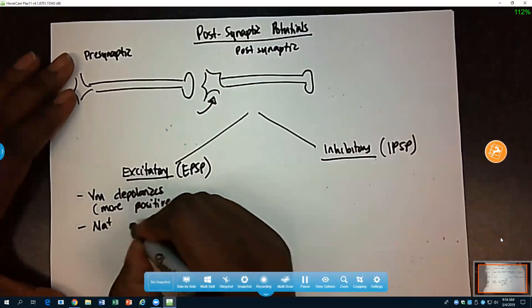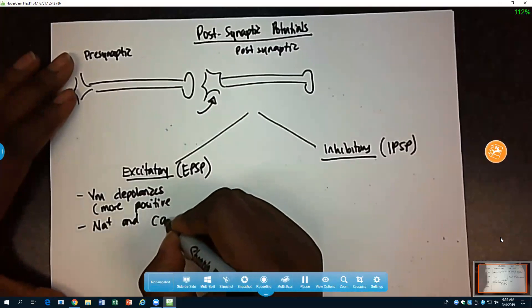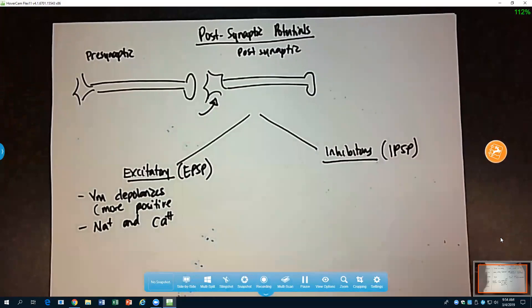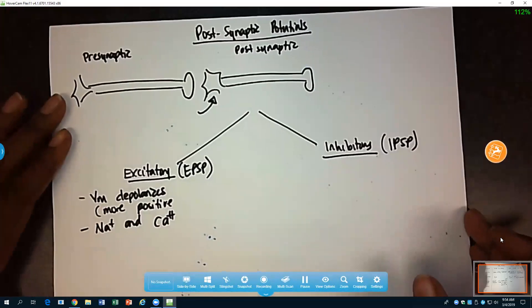So sodium and calcium are involved here. And we said that if we open up sodium channels, sodium would rush into the cell. That would increase or make the membrane potential more positive. As well as if we open up calcium channels, same thing. We have positive ions or cations moving into the cell, which would depolarize the membrane potential.